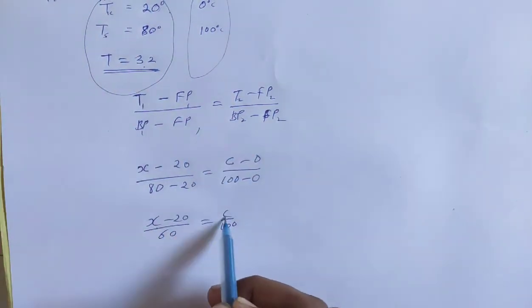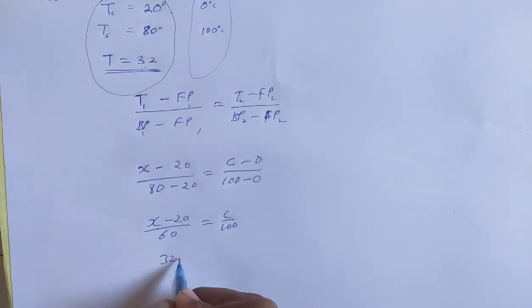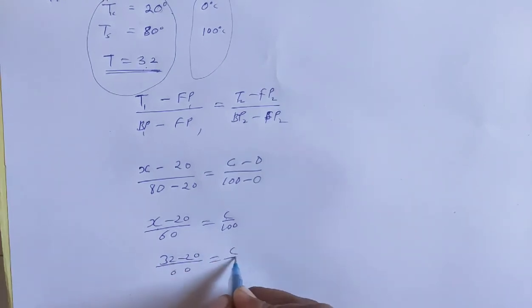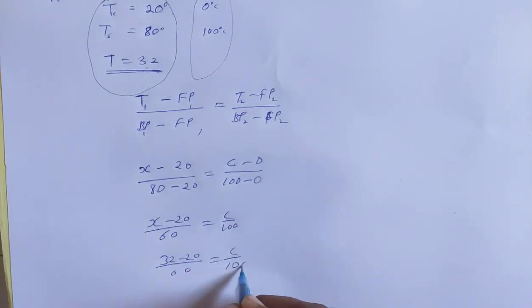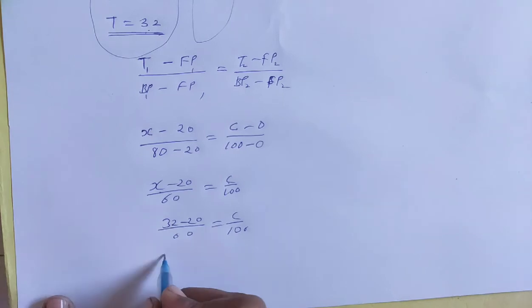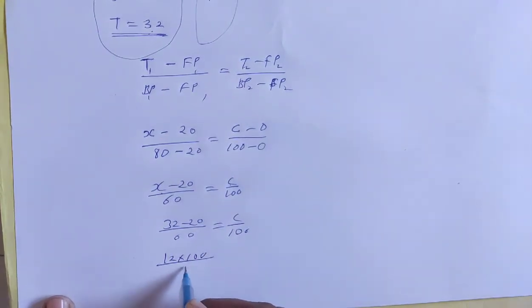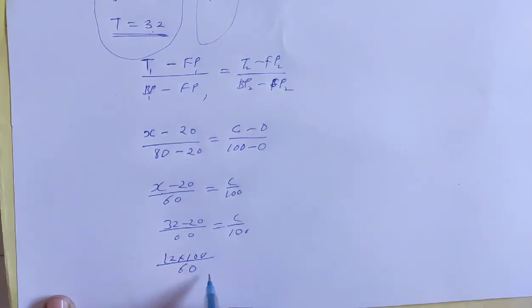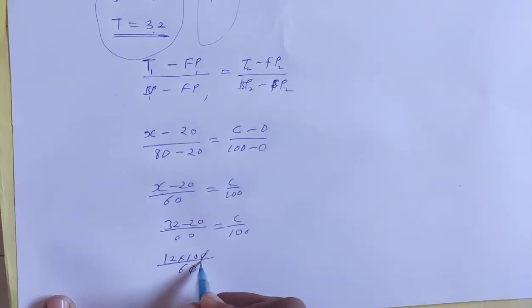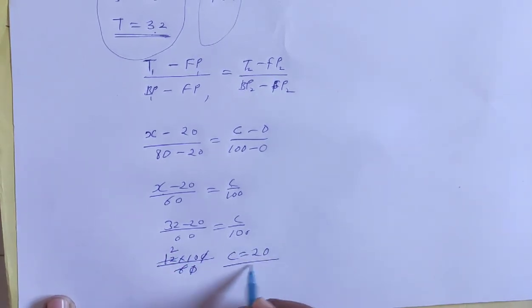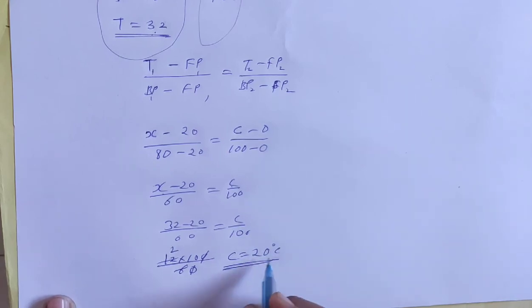Putting in the values: (32 - 20) / (80 - 20) = C / 100. So 12/60 = C/100, which gives 12 × 100 / 60. Cancelling zeros, 6 goes into 20, so C = 20.